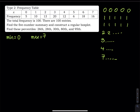What about Q2? Q2 is the median — the 50th percentile. To get the median, we start counting from the first zero, one at a time, until we reach the fiftieth value. But I don't want to write out a hundred numbers and count them. What if the total frequency were a thousand? I'm not going to waste fifteen minutes writing that out. So I'm going to use another technique.